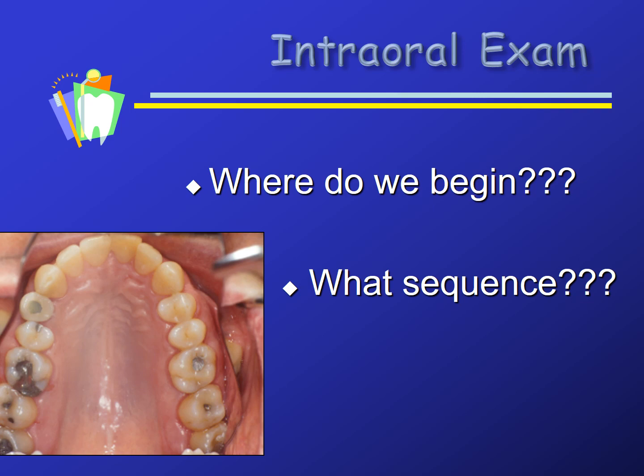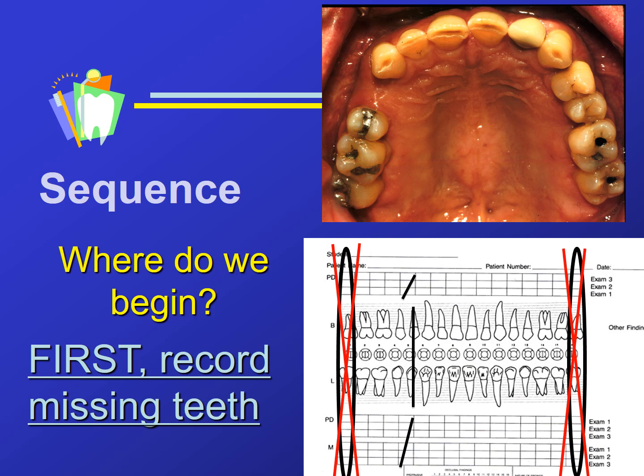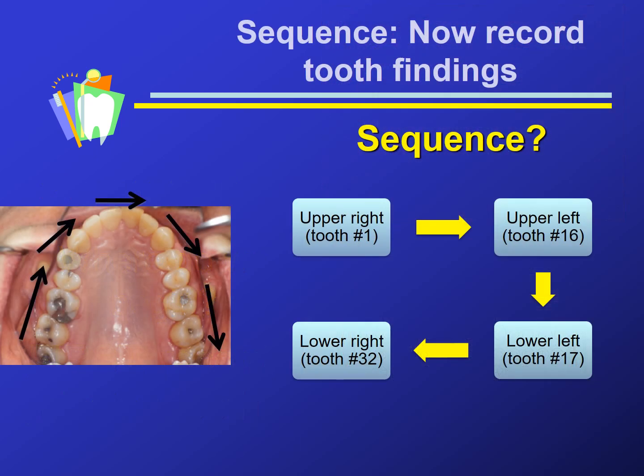We have a recommended sequence. The first step is to record missing teeth — look in the mouth, view the radiographs, and record any missing teeth. Once we have charted missing teeth, we inspect each individual tooth. We begin at the upper right and proceed in numerical order. If the patient is missing all of their maxillary molars, we begin with tooth number 4. Begin with whichever tooth is first in numerical order, then move tooth by tooth over to the upper left.